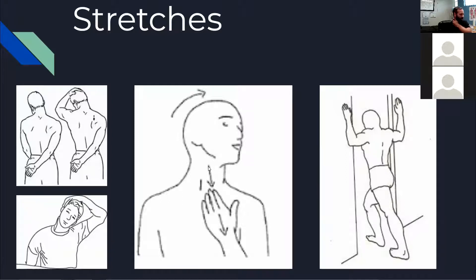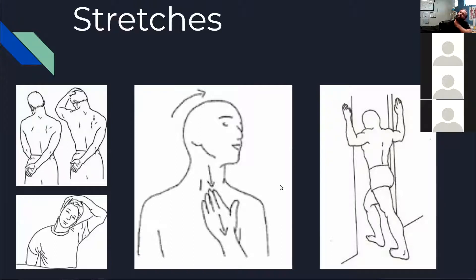The SCM works to bend your head to the same side but rotate it to the opposite side. So to stretch the right SCM, you tilt your head to the opposite side and look toward the same back of that muscle. If you feel the musculature there, you'll feel a little bit of a stretch, and you can use your hands to give a light pressure in that direction.